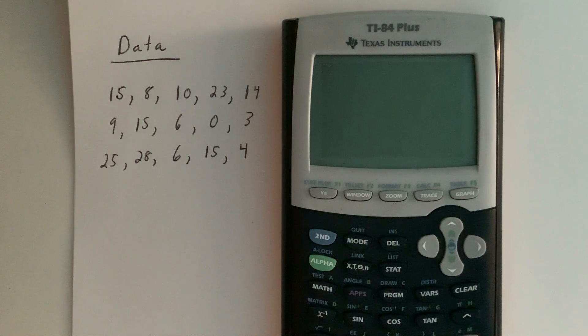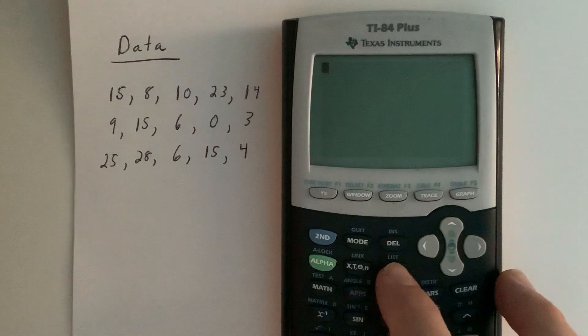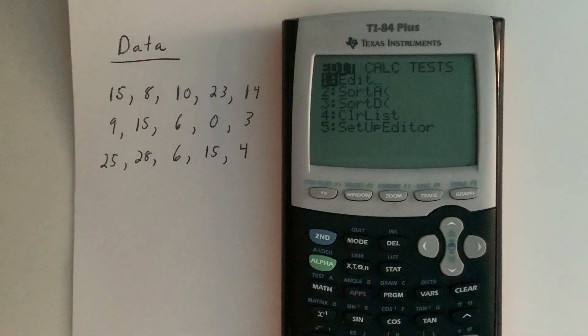To input the data into your calculator, what you're going to need to do is hit the STAT key, which will give you a menu of three choices: edit, calc, and tests. For our class, we're going to be almost exclusively using the edit and calc features. Edit allows us to input data into our calculator, and calc allows us to calculate statistical measures.